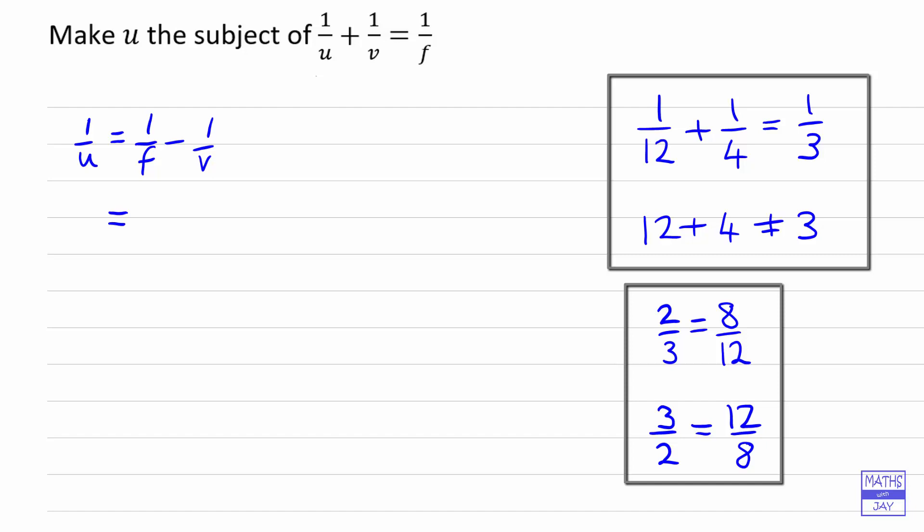We're going to multiply top and bottom of the first fraction by V to get V over FV, and multiply top and bottom of the second fraction by F. So one over V becomes F over FV. All we've got now is something over FV, so we've got V minus F over FV. So we're nearly there.